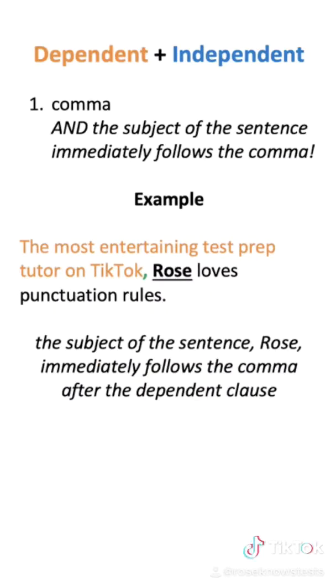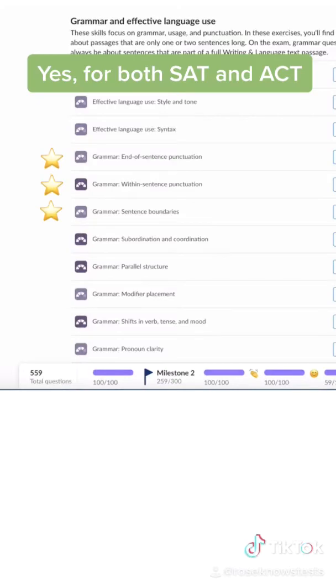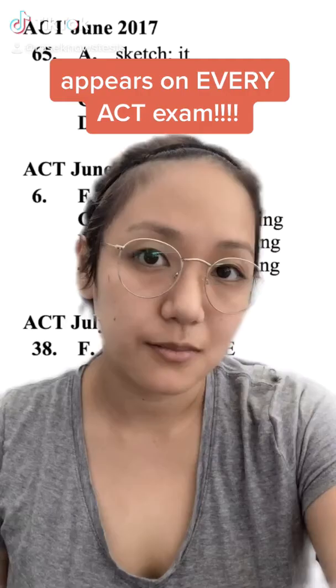There is only one way to follow a dependent clause with an independent clause, and that's with a comma. I also recommend these three Khan Academy exercises for additional practice.